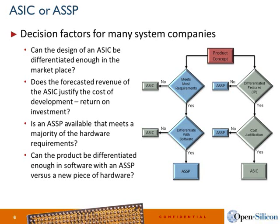When you decide whether to do an ASIC or an ASSP, there are many decisions to make. Can I design an ASIC that will deliver ROI and differentiate me in the market? Does the forecast of my ASIC justify the development cost? Or does an ASSP meet the majority of my needs, and can I differentiate enough in software? Ultimately, you want to be able to justify doing an ASIC. The moment you start switching off ASICs and going down the ASSP path, you've hit the decline period in the evolution of that product.